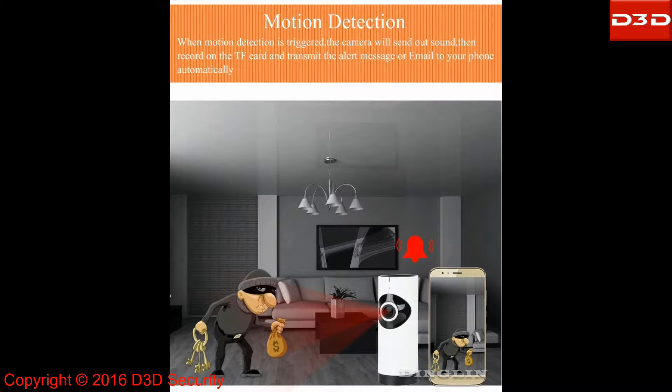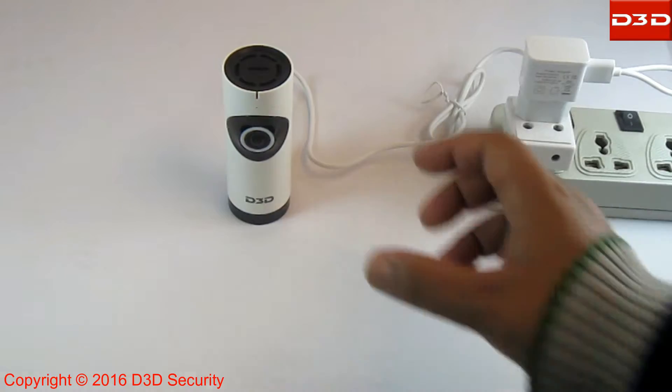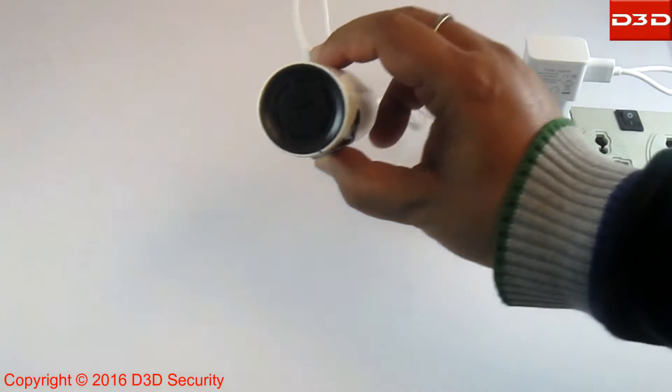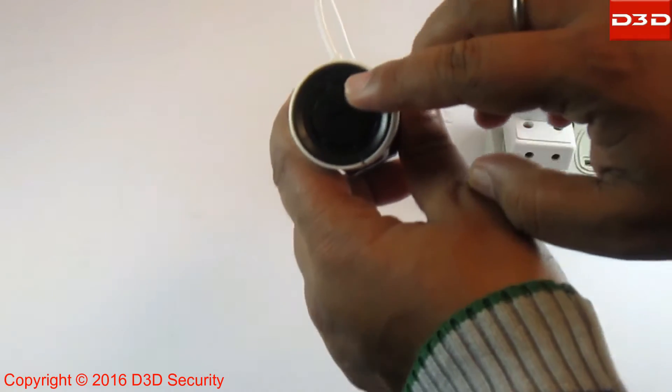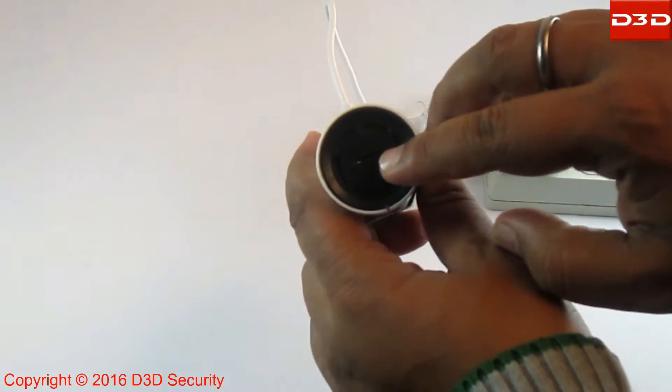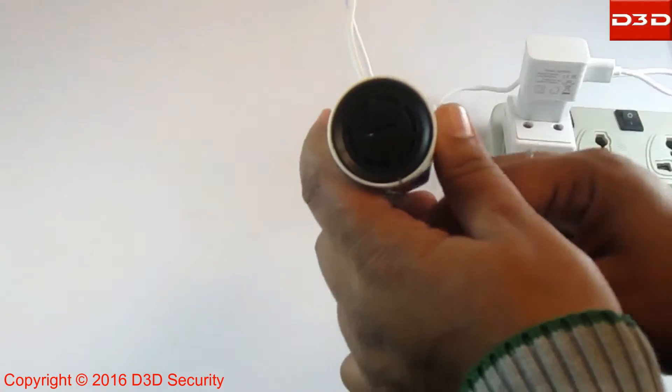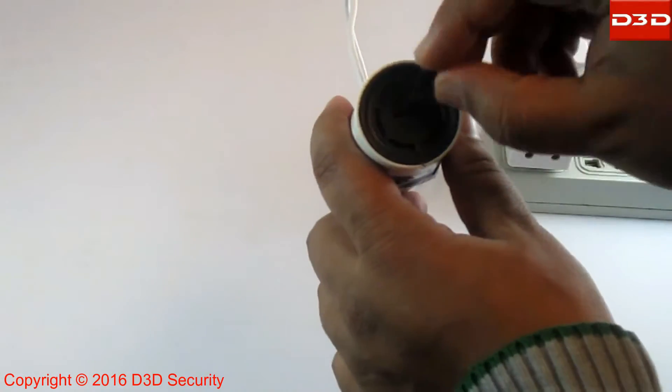This video will explain how to do motion detection setting. Insert the memory card in the camera.